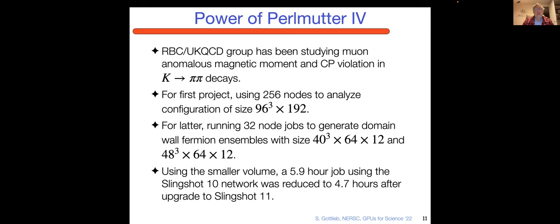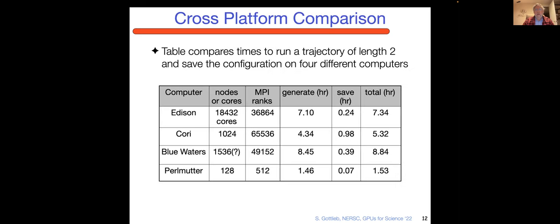The RBC UKQCD group has been doing two projects on Perlmutter. One involves the muon anomalous magnetic moment, which is an experiment that was done at Brookhaven initially about 20 years ago, and a little bit over a year ago, a new result was announced at Fermilab. This is one of the most intriguing pieces of evidence for new physics in the standard model. Their first project was using 256 nodes to analyze a 96 cubed by 192 grid. For the second project, they're running on 32 nodes with domain wall fermions, which involve a fifth dimension. A 5.9 hour job on Slingshot 10 was reduced to 4.7 hours after the upgrade to Slingshot 11.